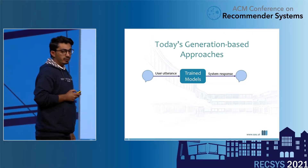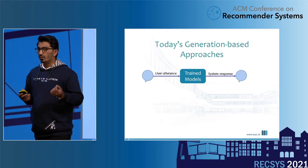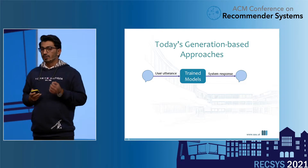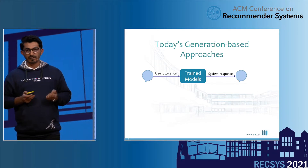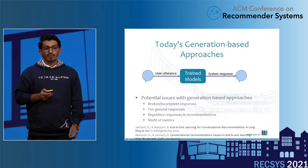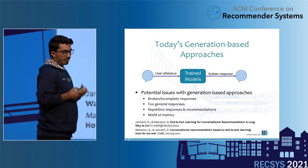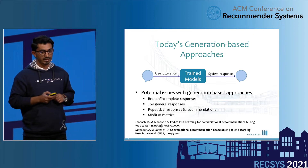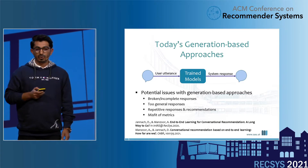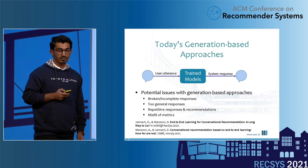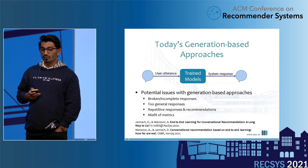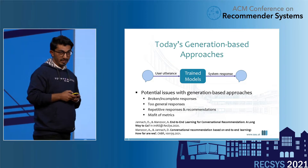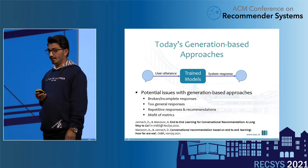Coming to generation-based approaches, one or multiple neural network-based models are trained on recommendation dialogues conducted between humans. Given the user utterance as input, these trained models generate responses in the given context. In our previous research, we did a comprehensive analysis evaluating the performance of responses generated by such generation-based approaches, and found that broken responses are very often generated. We also found issues such as generation of too-general responses, repetitive responses and recommendations in the same dialogue, and sometimes the misfit of metrics applied in their evaluation.